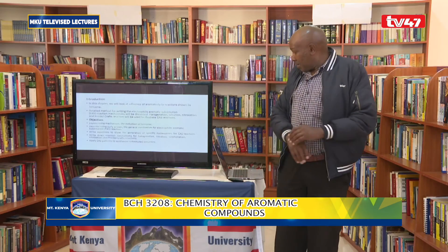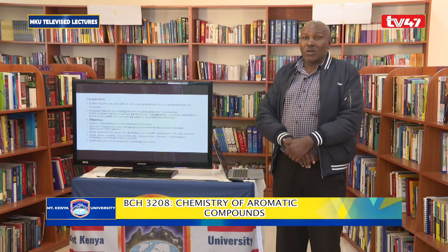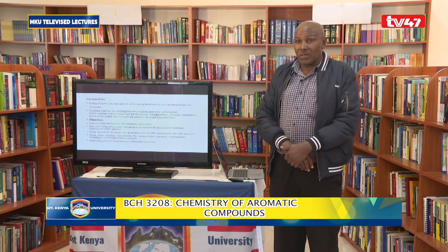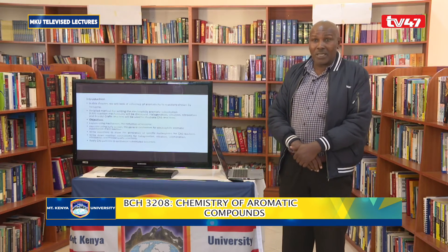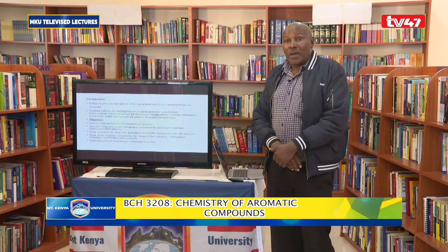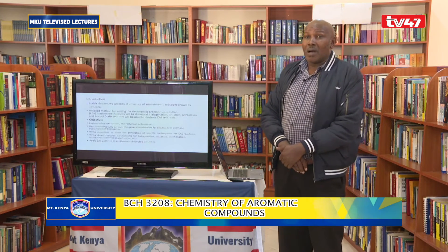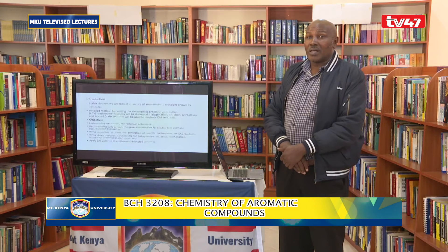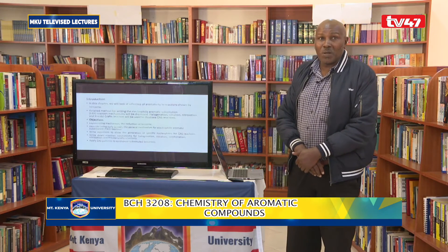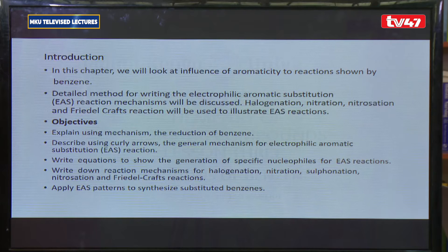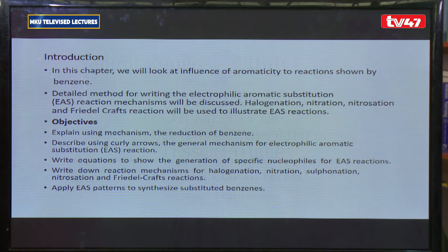In Lesson 1, we looked at introduction and aromaticity, where we examined what we understood by aromaticity and what types of compounds are considered to be aromatic. We found that what differentiates aromatic compounds from the rest of the organic compounds is their extra stability due to delocalization of electrons within the ring.